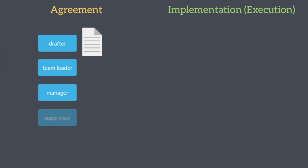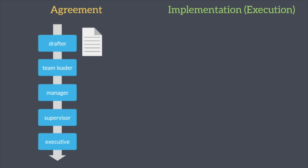First, we'll go over how approvals work. There are two types of approvals available in Moffis Suite: agreement and implementation or execution approvals. Agreement approvals only need the agreed approval of selected superiors. We call the line of superiors the user may select an internal approval route.